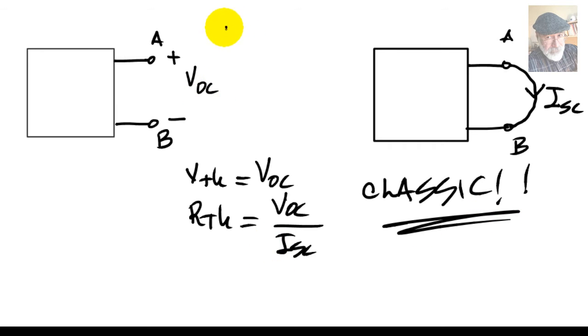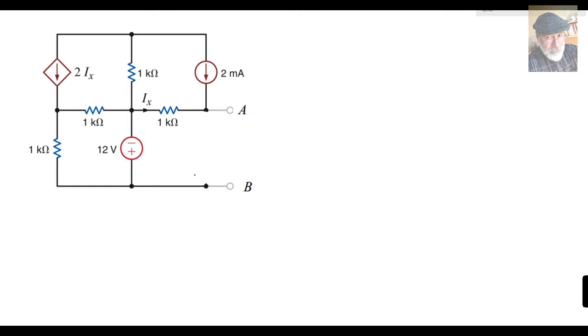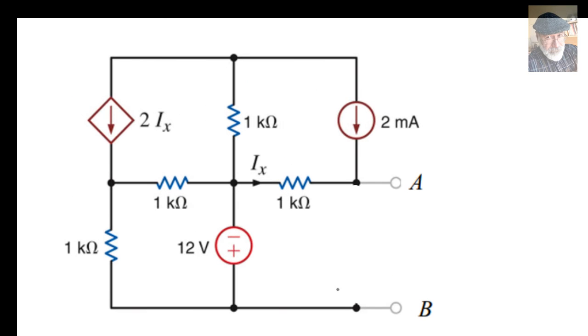Open circuit test, OCT, short circuit test, SCT. So we're going to use the classic method to find the Thevenin equivalent of the circuit seen by the 3kΩ resistor. Of course, the 3kΩ resistor has been expunged, as instructed by the description of the problem. Now we need to find the open circuit voltage here, this voltage here, VOC.